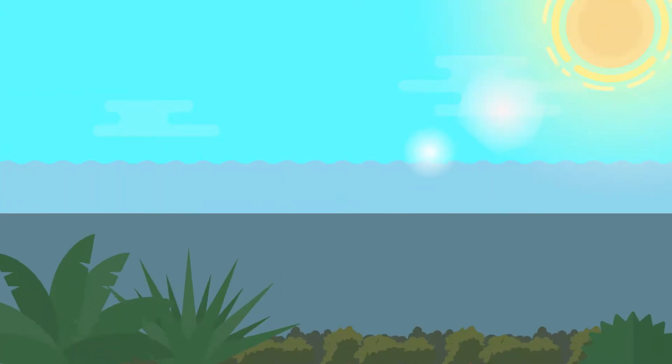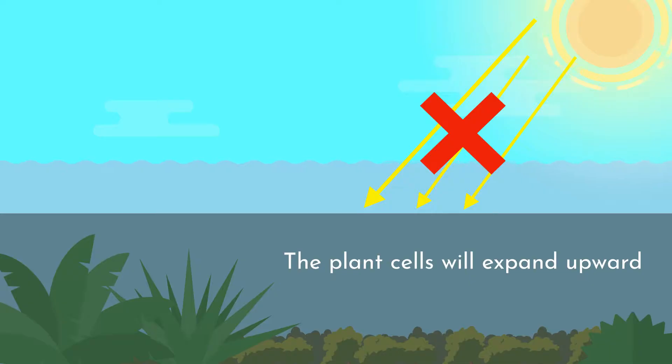In plants that have to grow in darkness, like plants found underwater where there is no direct light source, the plant cells will expand upward in a process called geotrophism.